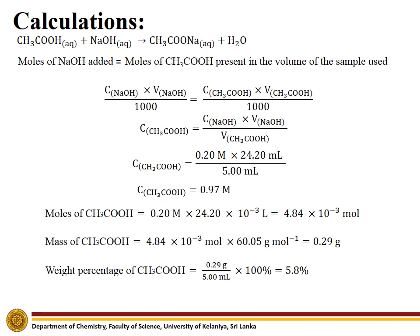As extra facts, we should know that in order to see the color change of the titration clearly, we should add water to dilute the natural color of vinegar. Also, a weak acid is present in vinegar, so this is a weak acid-strong base titration. To determine the end point of the reaction, phenolphthalein can be used, but methyl orange cannot be used.